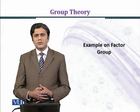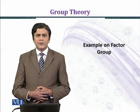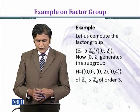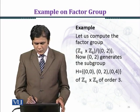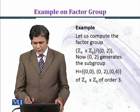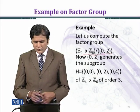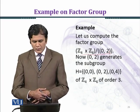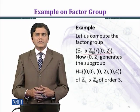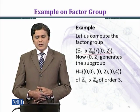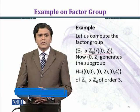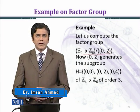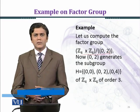In this module, we shall consider an interesting example on factor groups. Let us compute the factor group Z4 cross Z6 over the cyclic group generated by (0,2). Z4 cross Z6 contains 24 elements, where the first coordinate is under modulo 4 and the second coordinate is under modulo 6.